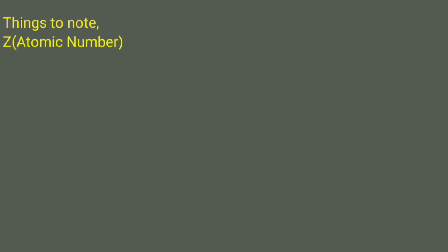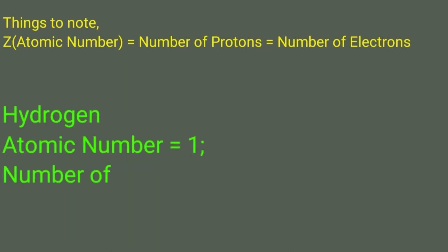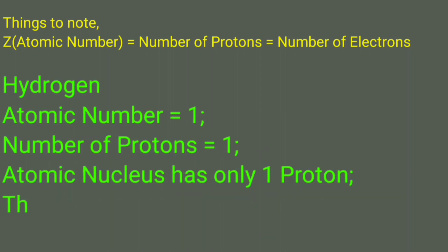Things to note for hydrogen atom: atomic number is equal to number of protons, which is equal to number of electrons. For hydrogen, atomic number is one, number of protons is one.